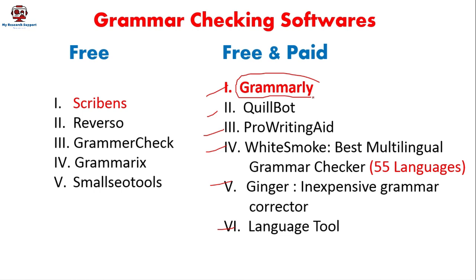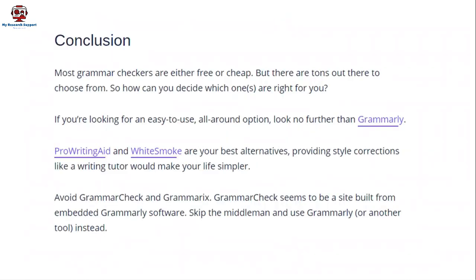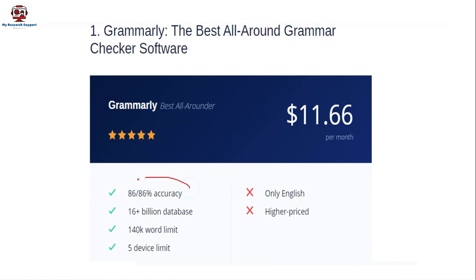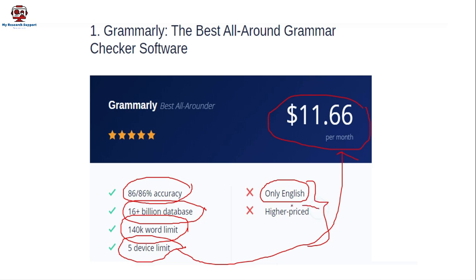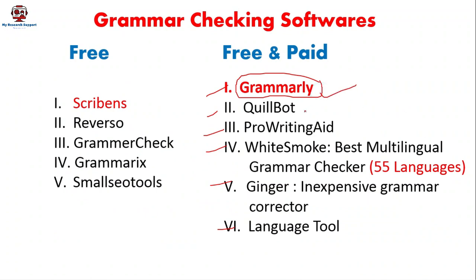Grammarly is the best choice — I can rate it very high because of its accuracy, around 86%, a database of 16+ billion entries, and a 140K word limit. For business accounts, the cost is even higher, but you can register on multiple devices. The most important disadvantages of Grammarly are that it can only be used for the English language and it is a little bit higher priced compared to some other software.